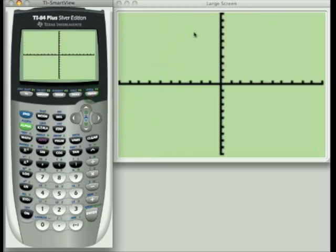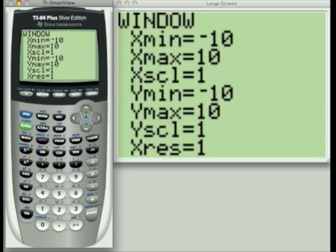So I hit graph. I just have my axis here now. I'm going to go back to the Windows Settings screen now. I'm going to change some of these settings so you can see the effect it has on our graphing window.